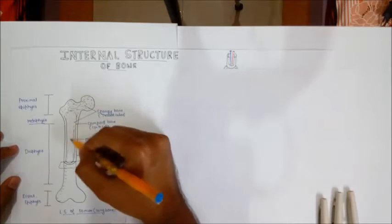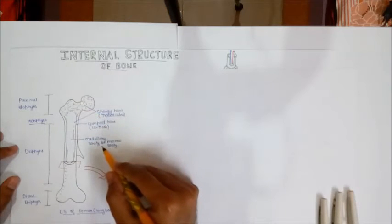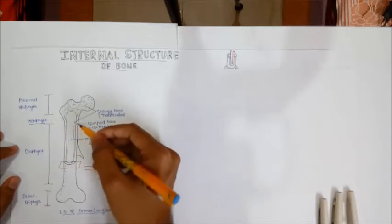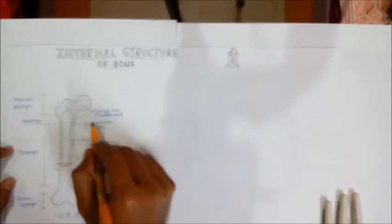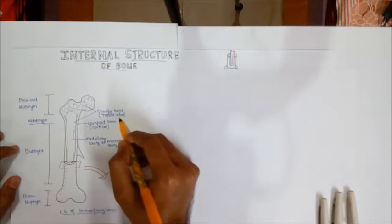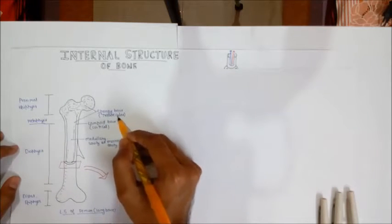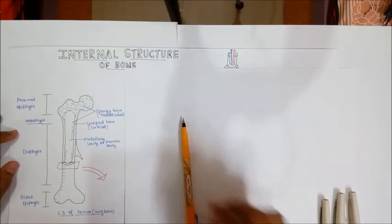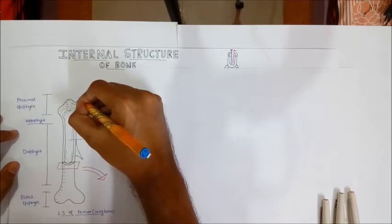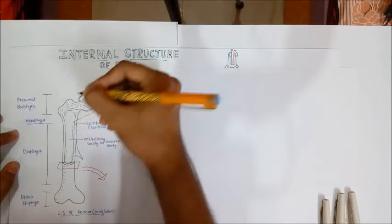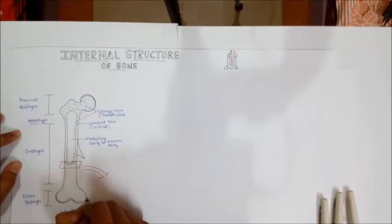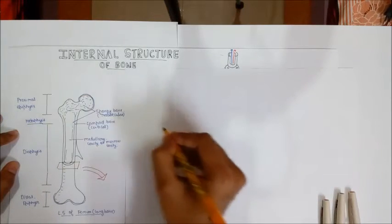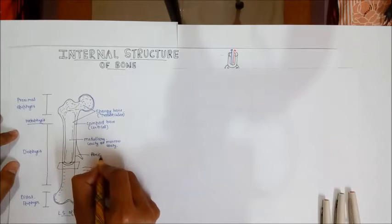At the interior of the long bone is the hollow cavity called the medullary cavity or marrow cavity, which is filled with bone marrow. Enclosing this marrow cavity are two major bone tissues: the outer one is the compact bone or cortical bone, and the inner one is the spongy bone, also called trabecular or cancellous bone. The entire bone, except the articulating surfaces, is wrapped by a membrane called the periosteum.